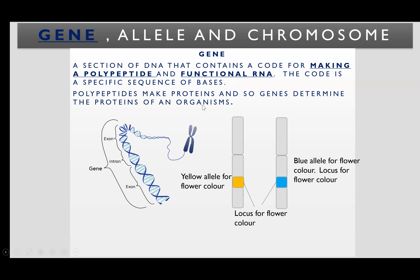The polypeptide chain is the primary structure of a protein that will then be folded, coiled, and held together by hydrogen, ionic, and disulfide bonds to make a functional protein. That's why at GCSE the definition was that a gene codes for a protein or a characteristic — it actually just codes for the polypeptide chain, which then gets further processed in the Golgi apparatus. This diagram shows a chromosome made up of tightly coiled DNA, and just a small section of that DNA is a gene.